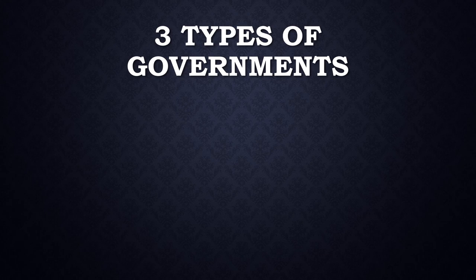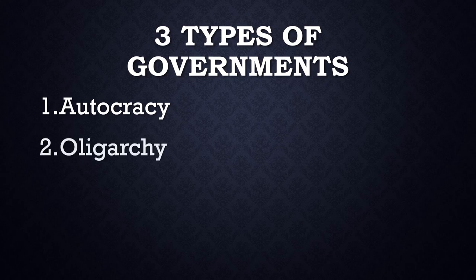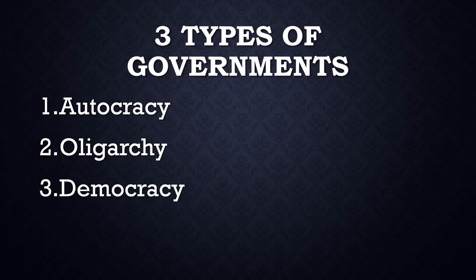Political scientists generally divide governments into three categories depending on the number of people who are involved in decision-making. Autocracy is ruled by one person, oligarchy is ruled by a group of leaders, and democracy is ruled by all the citizens of the country. As we move from one category to another, we see that the number of people who hold power in the government increases significantly.